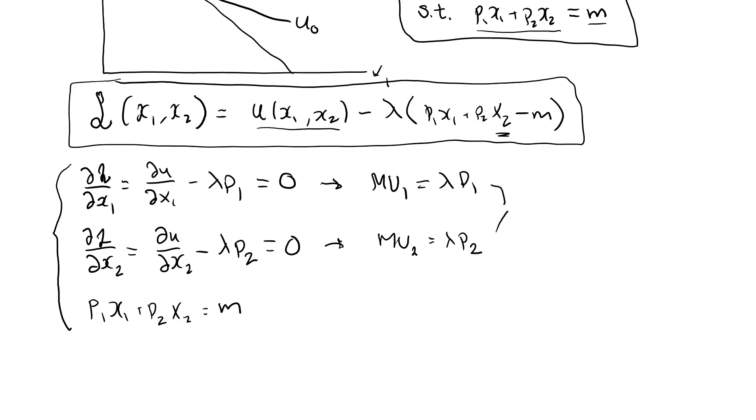Combine these two, and we see that if I do mu1 divided by mu2, then this is equal to mu1 is lambda p1, and mu2 is lambda p2. Lambda cancels, and this is p1 over p2.